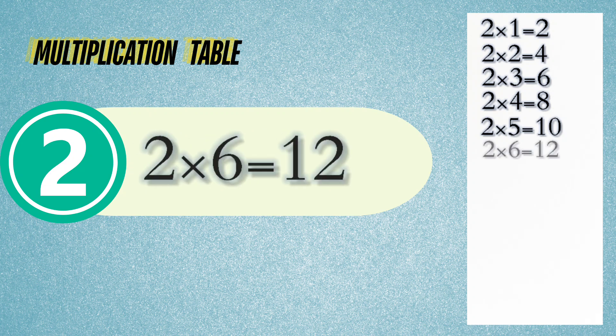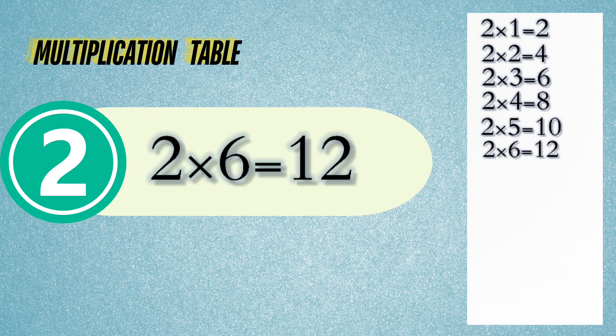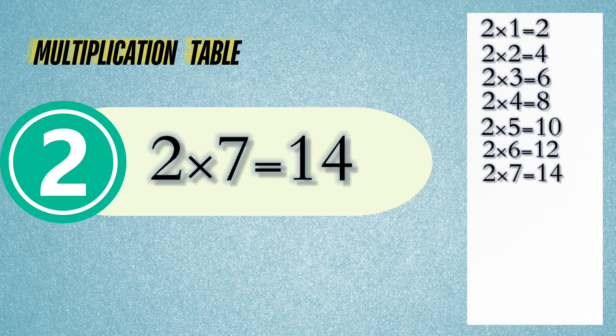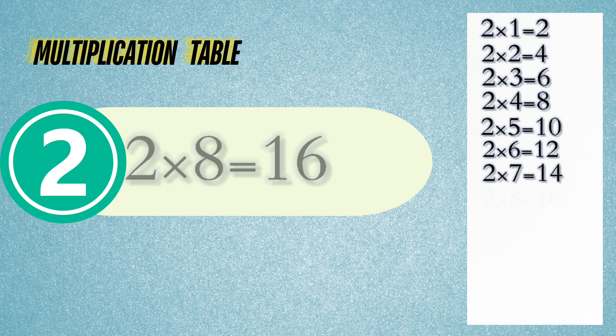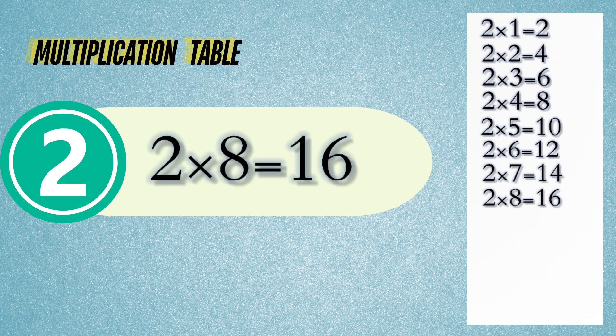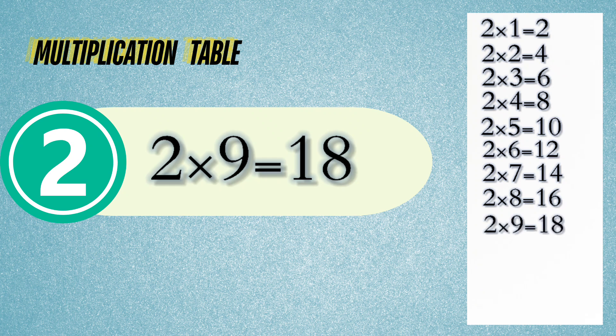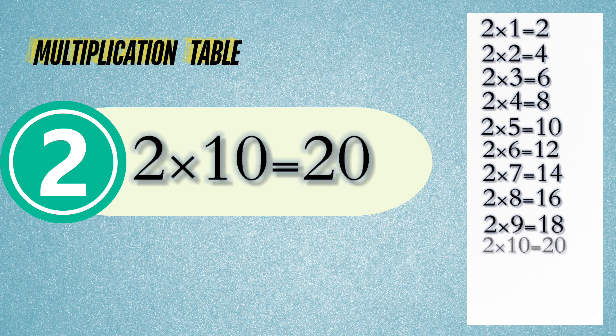Two times six is twelve. Two times seven is fourteen. Two times eight is sixteen. Two times nine is eighteen. Two times ten is twenty.